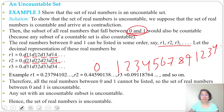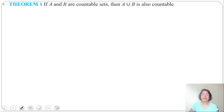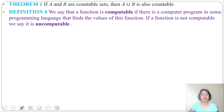So the set of real numbers is uncountable. Just remember: the set of real numbers is uncountable. Theorem 1: if A and B are countable sets, then A ∪ B is also countable. Definition 4: a function is computable if there is a computer program in some programming language that finds the value of this function; otherwise, the function is uncomputable.